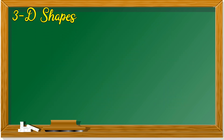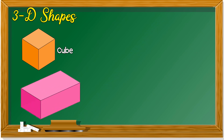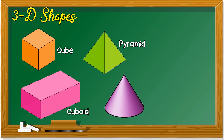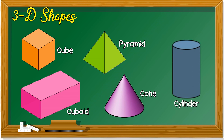How about the name of the three-dimensional shapes? Cube. A bit longer than a cube is cuboid. This is a pyramid. Pyramid has a square base. This one has a circle base — this is a cone, like an ice cream cone. Last one: cylinder.